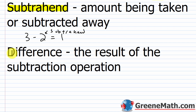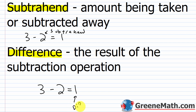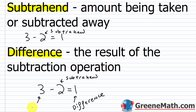Then finally we have the difference. The difference is the result of the subtraction operation — basically what we have left over. So in 3 minus 2 equals 1, the 1 here, the result or what we have left over, is the difference. So to label these parts: 3 is the minuend, 2 is the subtrahend, and 1 is the difference.